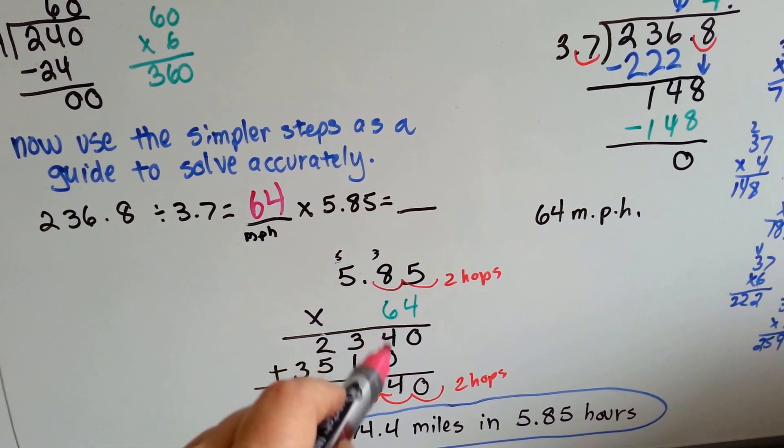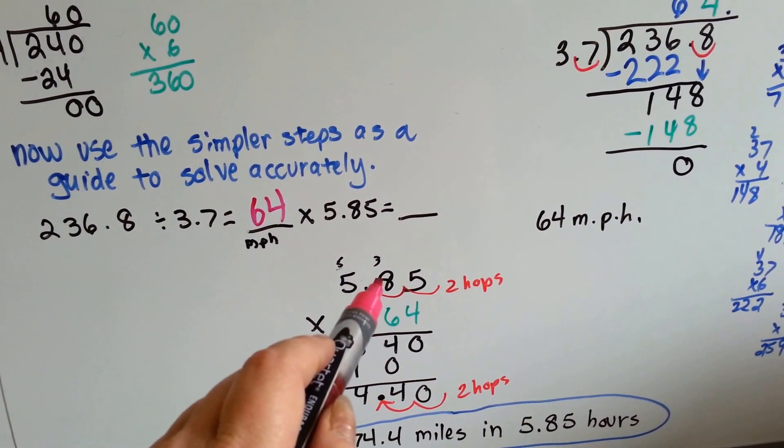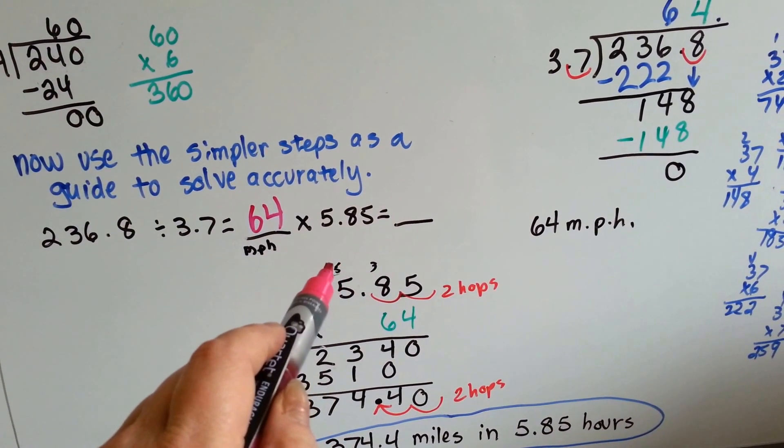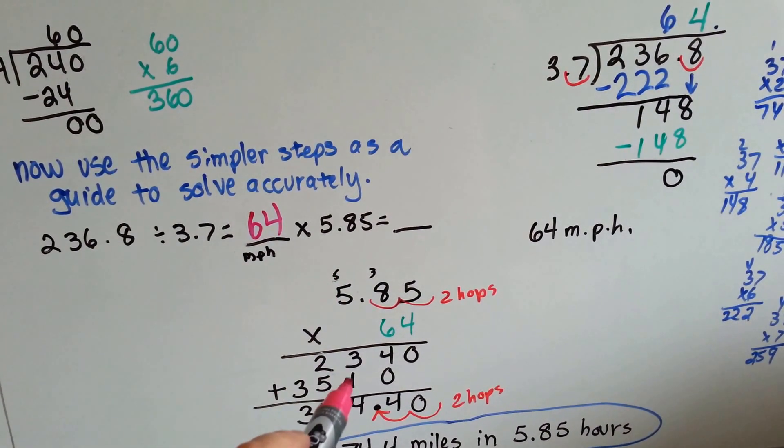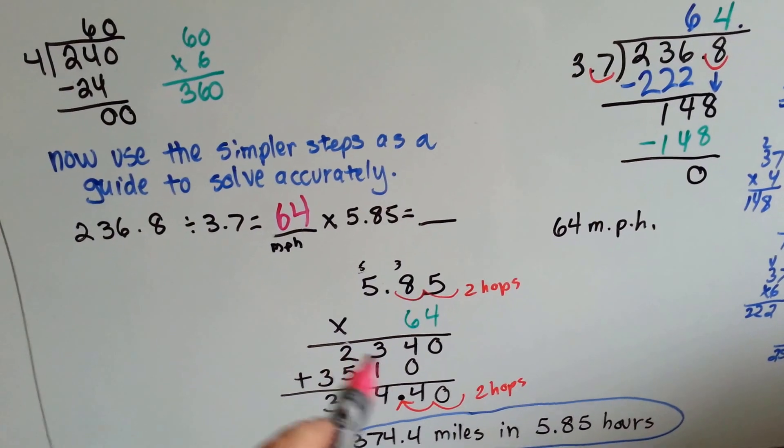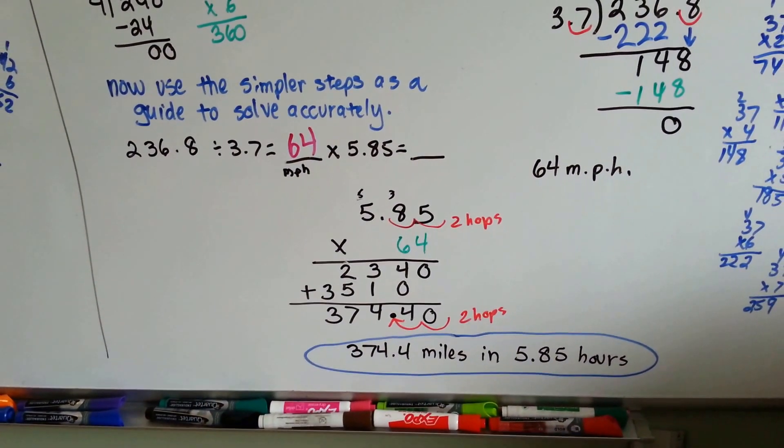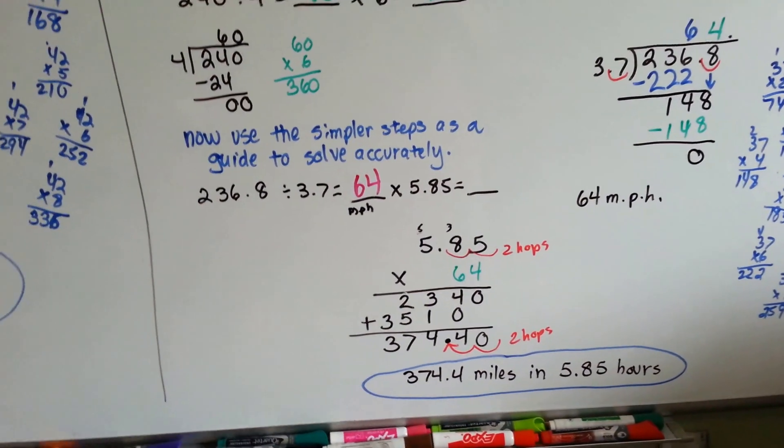Now, we're in this column. 6 times 5 is 30. Carry the 3, put the 0 down. 6 times 8 is 48, and the 3 is 51. Carry the 5, put the 1 down. And then 6 times 5 is 30, and the 5 is 35. We add it all up and we get 374.4 miles in the 5.85 hours.